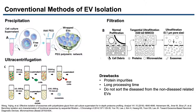Ultracentrifugation is based on separation of particles according to their buoyant density, but this method does not sort the disease from the non-disease related EVs. Sequential filtration or combined filtration with ultracentrifugation is used to isolate high-grade exosomes; however, clogging and shear stress can damage the EV particles.